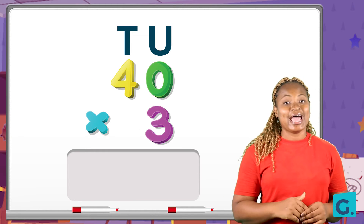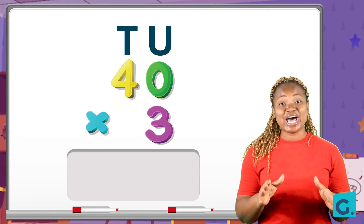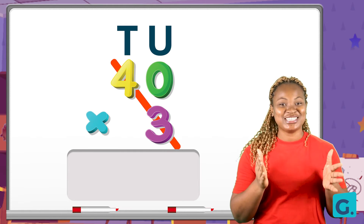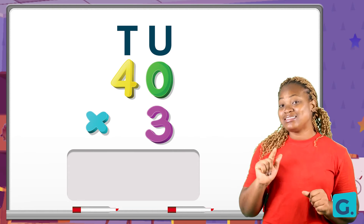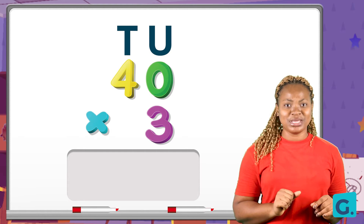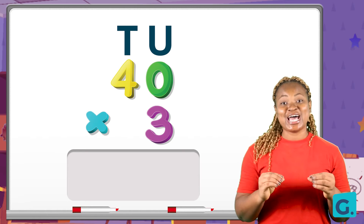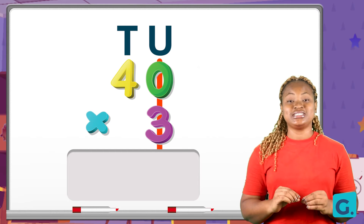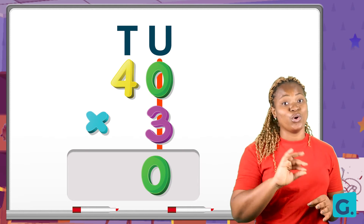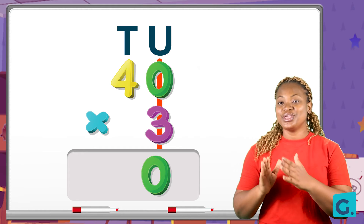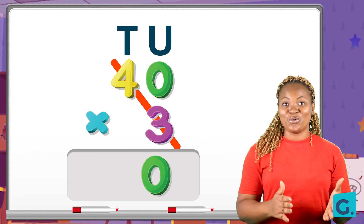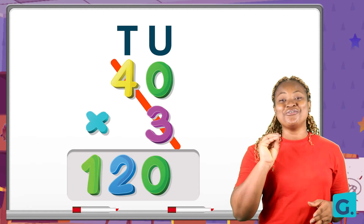Now it's time to multiply. Remember the reading: unit times unit, unit times tens — that's how the order goes. So we have forty multiplied by three. Are you ready to multiply with me? Unit times unit: we say three times zero. Any number multiplied by zero gives us zero, so three times zero gives us zero. Next, unit times tens: three times four, and that gives us twelve. We write twelve down.